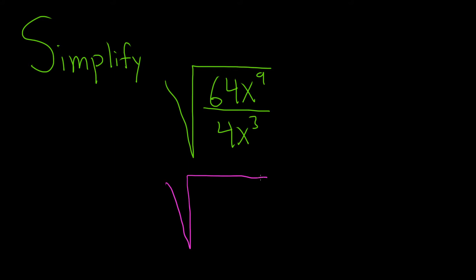So this is the square root of... So the 64, we can write that as 8 squared. The x to the 9th is going to take some more work. Let's go to the side here and think about it.